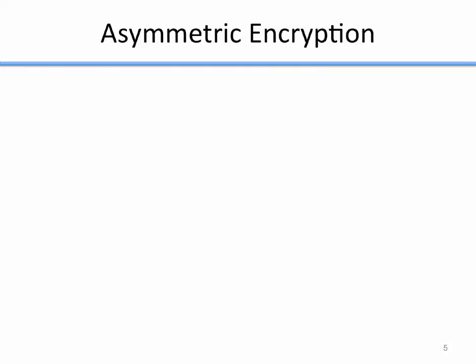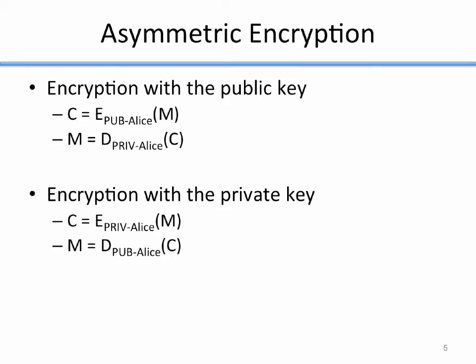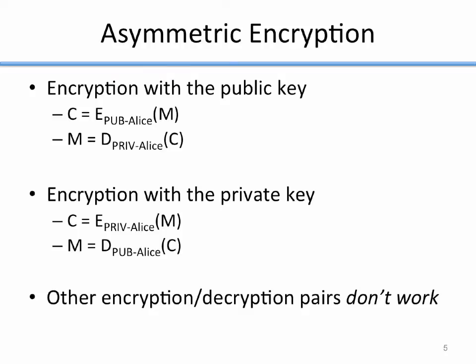In an asymmetric system, you can encrypt with the public key — if someone encrypts a message with Alice's public key, it needs to be decrypted with Alice's private key. Conversely, if you encrypt with the private key, it needs to be decrypted with the public key. These are the only two pairings that work. You can't encrypt with a private key and decrypt with the same private key, or encrypt with a public key and decrypt with the same public key. Only these two cross-pairings work for encryption and decryption.